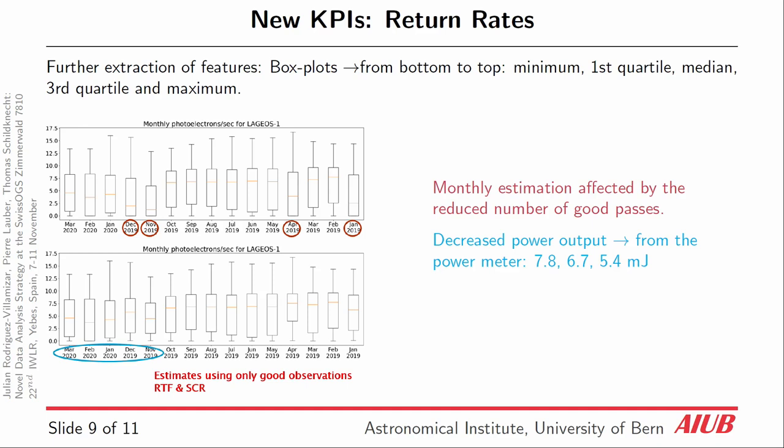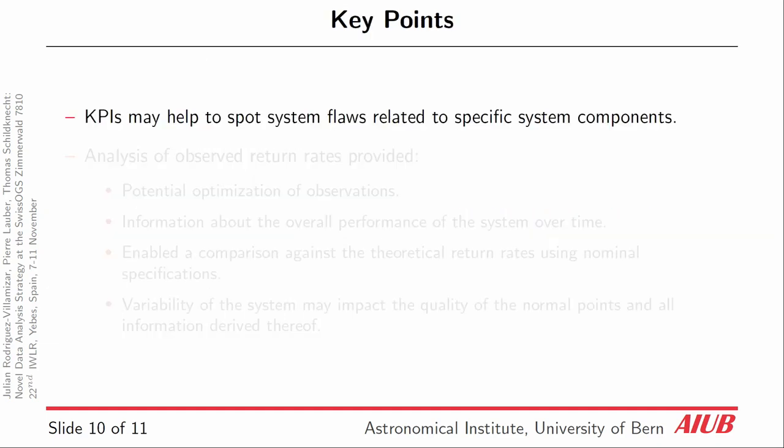One step further, we wanted to corroborate these results with measurements from the power meter, and the two were highly correlated. In this case, the return rates gave us the opportunity to spot a system flaw related to the health of our laser system. Does it always point in this direction? Not necessarily — correlation does not mean causation, and one has to be very careful. But at first glance, it provides a flag that will help us check our system and hopefully fix it.